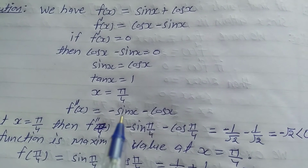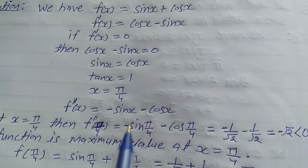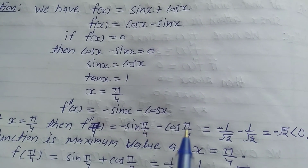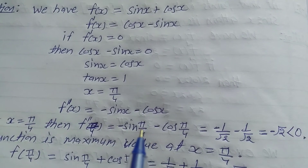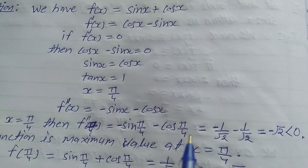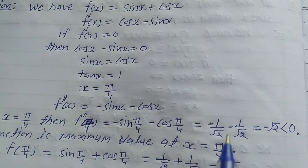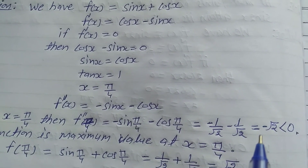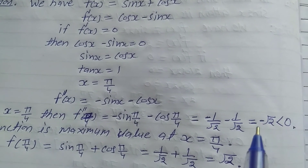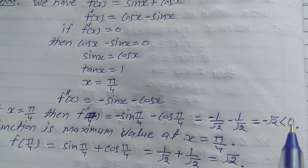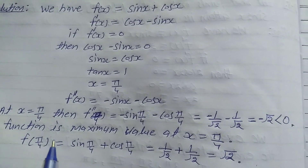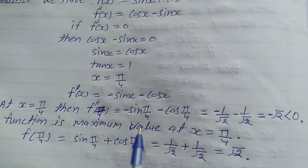At x = π/4, f''(π/4) equals minus sin(π/4) minus cos(π/4). Since sin(π/4) = 1/√2 and cos(π/4) = 1/√2, this gives minus 1/√2 minus 1/√2, which equals minus √2. Since this value is less than 0, this is the maximum value condition, so the function is maximum at x = π/4.